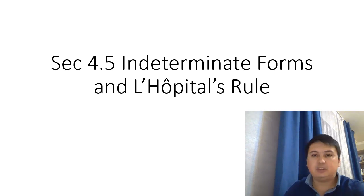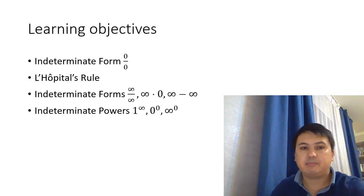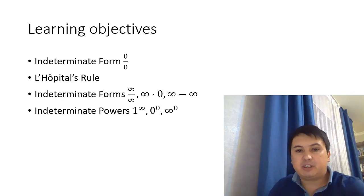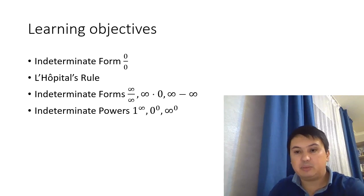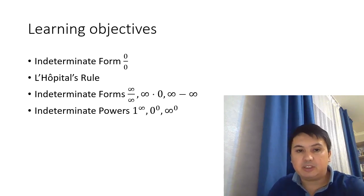Today we're going to discuss indeterminate forms and L'Hôpital's rule. The learning objectives are: we first start with a discussion of the indeterminate form 0/0, then we introduce L'Hôpital's rule, then we discuss other indeterminate forms such as infinity over infinity, infinity times 0, and infinity minus infinity. Finally, we also consider indeterminate powers: 1 to the infinite, 0 to the 0, or infinite to the 0.